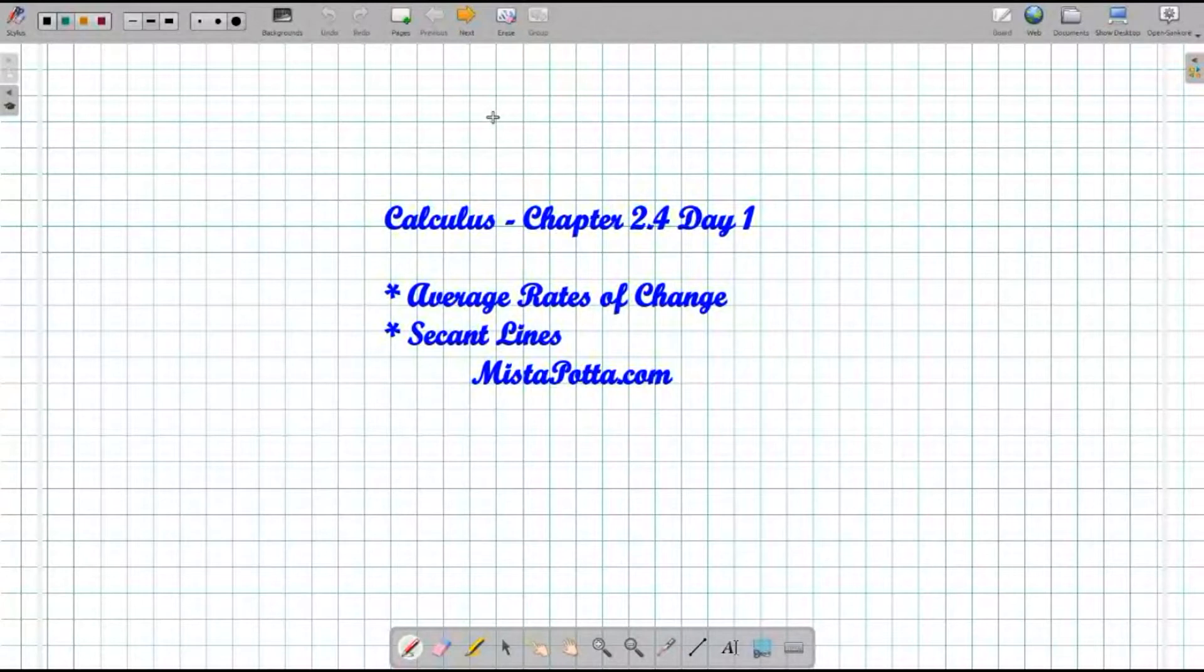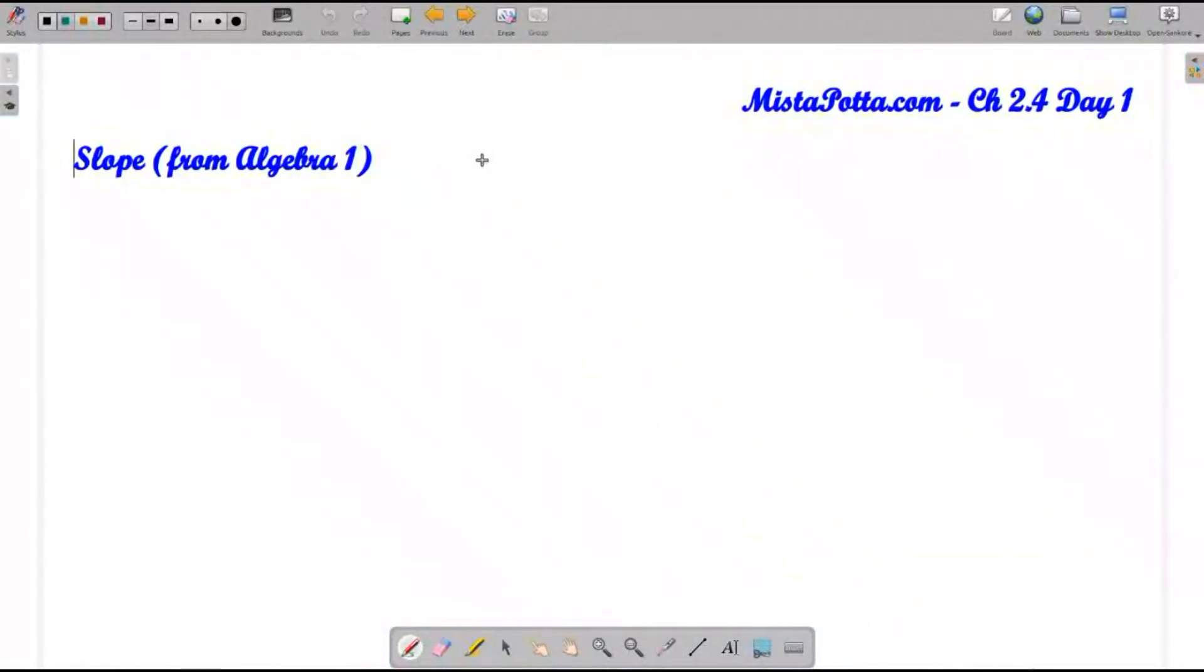What we're going to do today is take a look at it from the average rate of change situation, and we're also going to take a look at some secant lines.